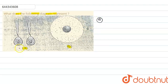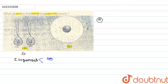In diagram A, the given diagram shows gametes. This diagram is showing isogamous condition. Isogamous means — 'iso' means same, and 'gamus' means gametes — so in the isogamous condition, both the gametes are the same and similar in morphology.